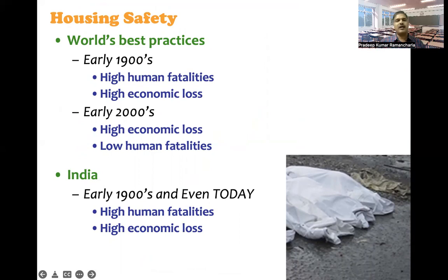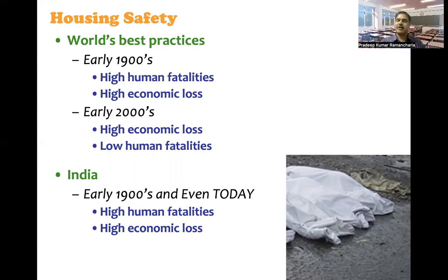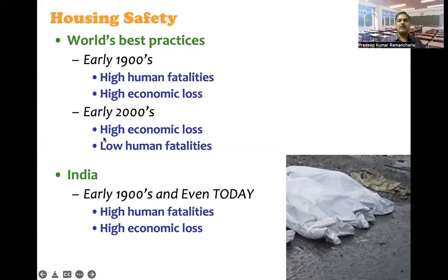When we look at world best practices from early 1900s to early 2000s and where India stands in comparison: in early 1900s there were high human fatalities and high economic losses everywhere. But over 100 years, people in other countries focused on earthquake-resistant design practices and mitigation measures, thereby achieving low human fatalities. If an earthquake occurs, the number of deaths for a similar level of shaking in those countries will be low. Economic loss is still high, but research is ongoing to reduce that.